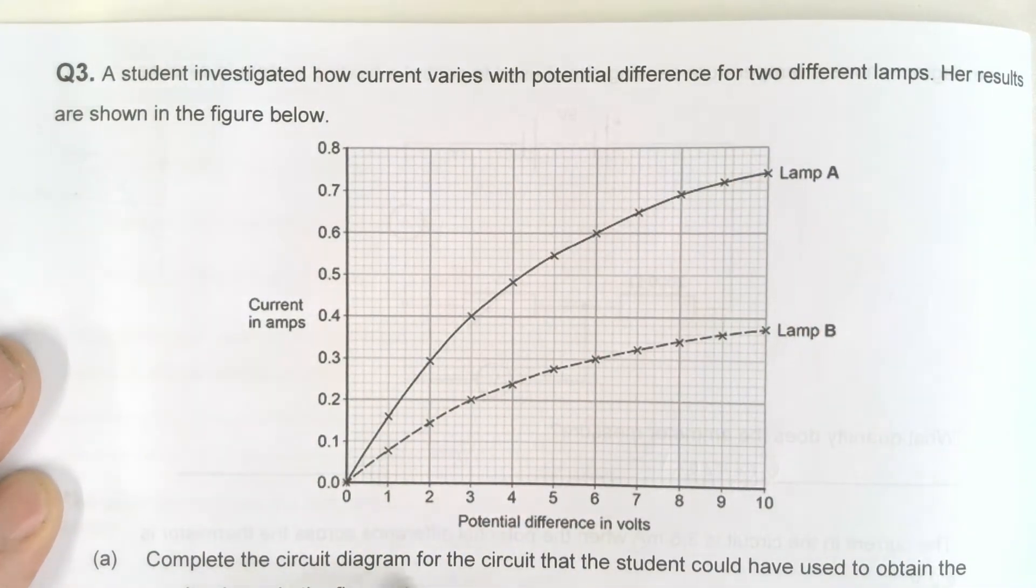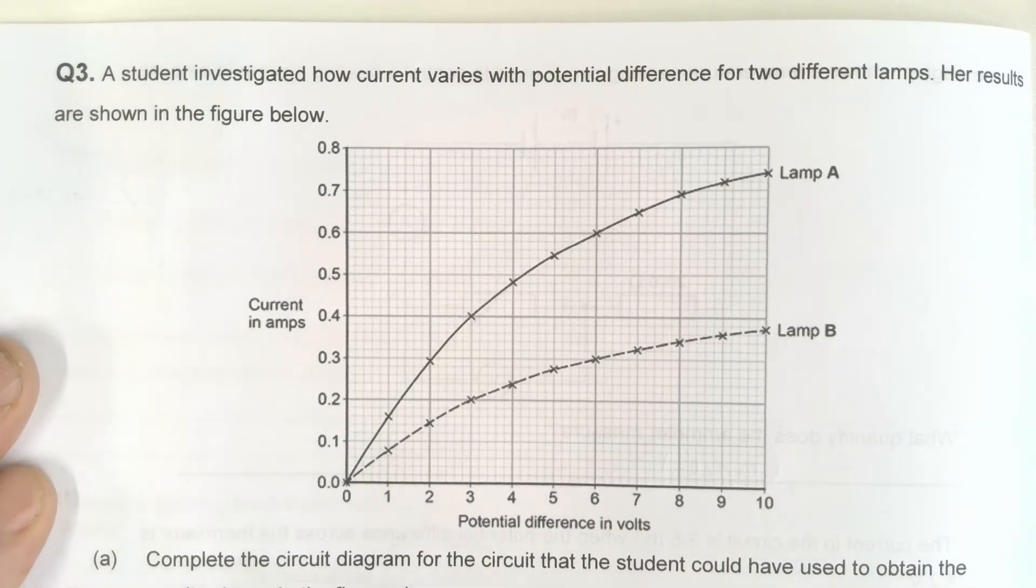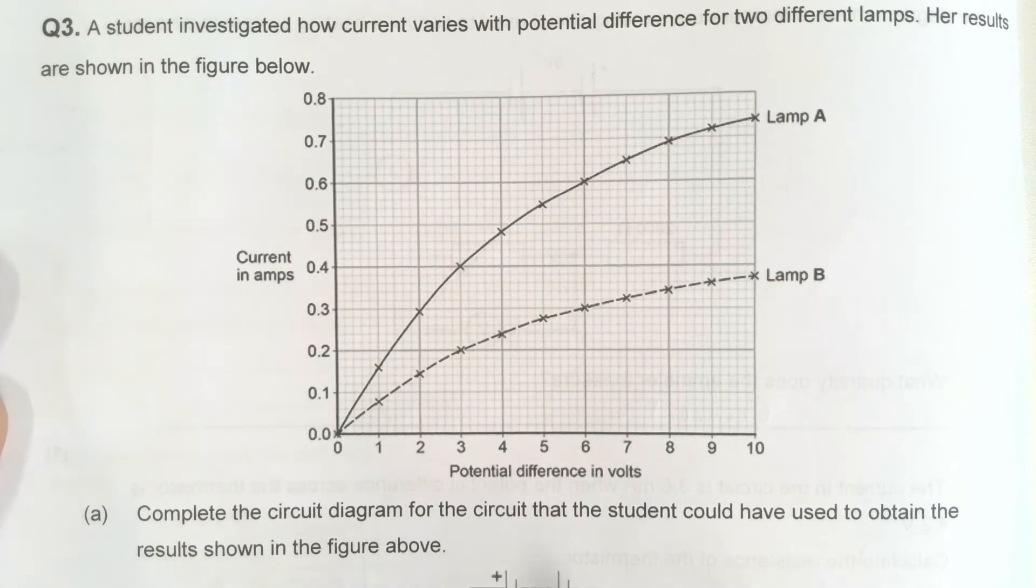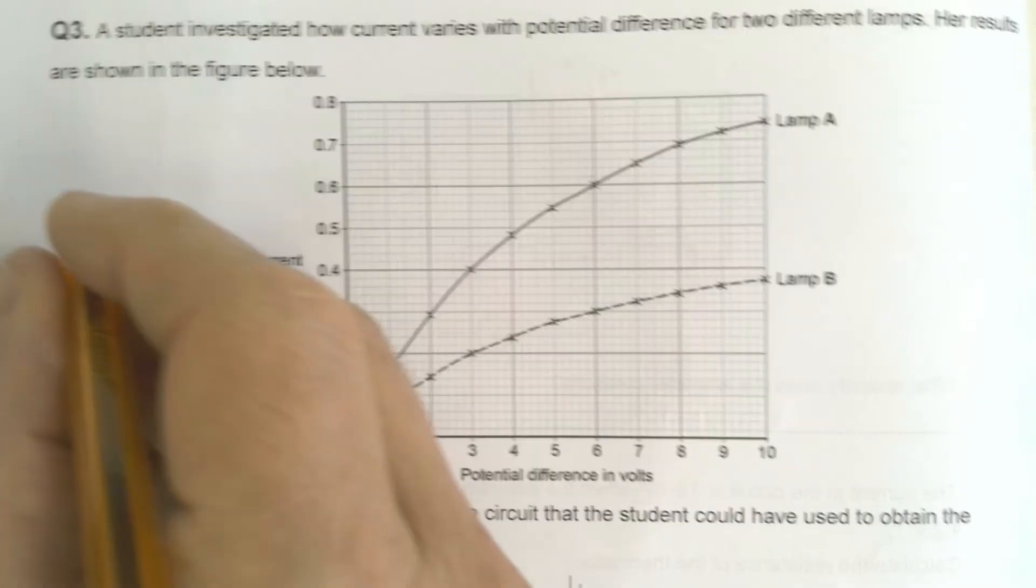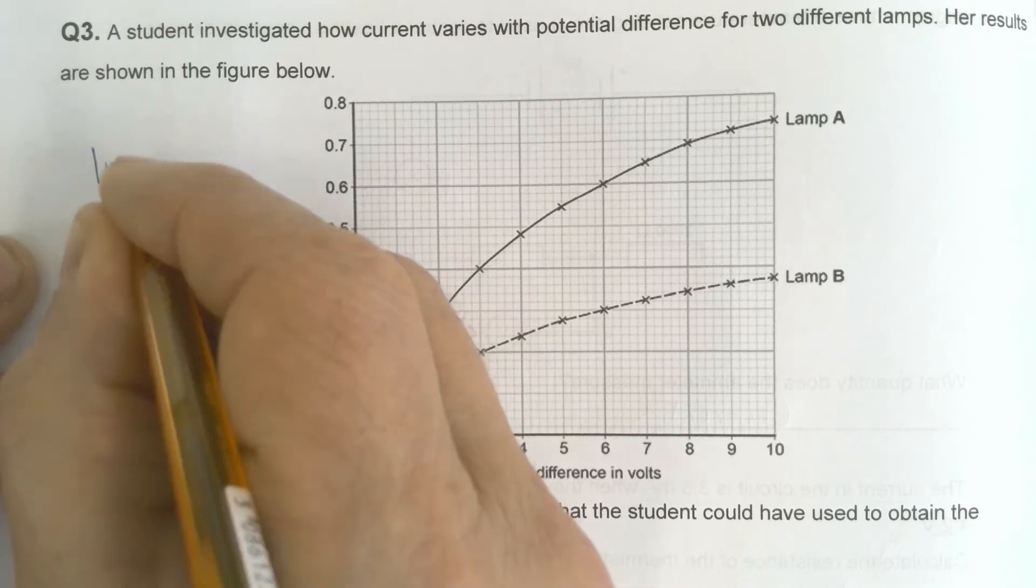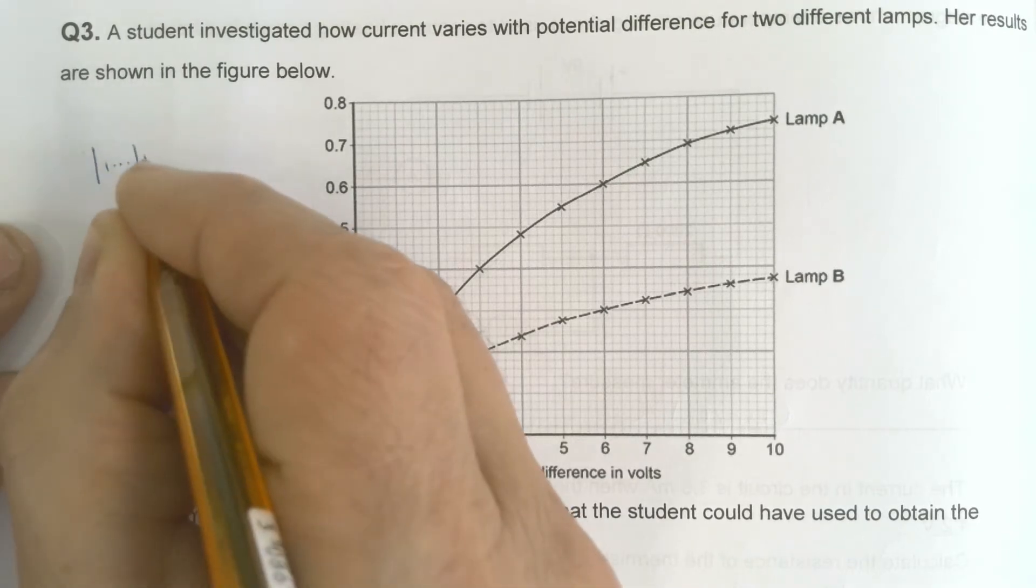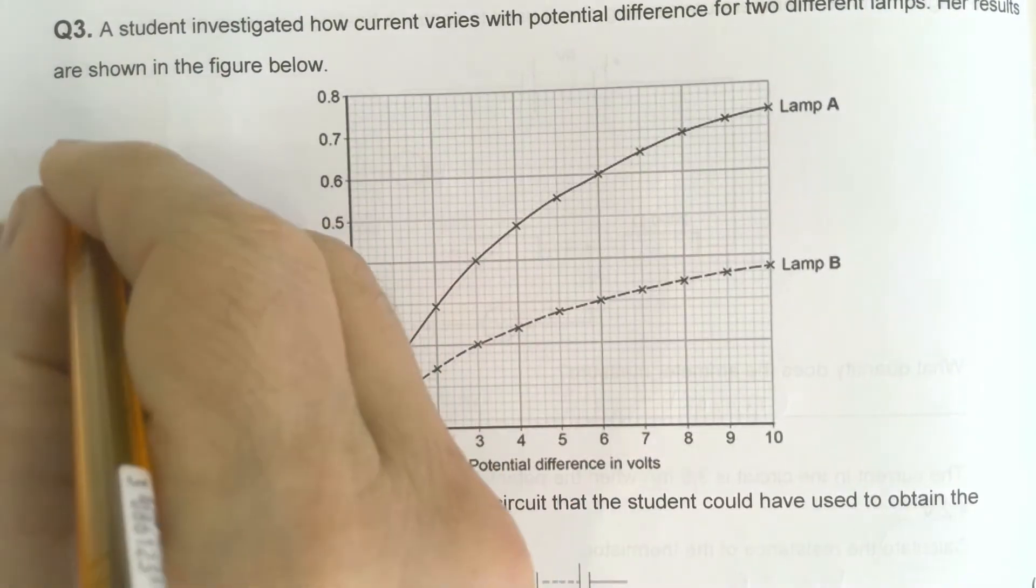Complete the circuit diagram for the circuit that the student could have used to obtain the results shown in the figure above. There's not a great deal of room for this but let's squeeze it in. This is a practical, it's one of the required practicals where you look at the resistance of different components.